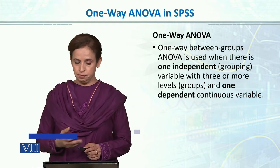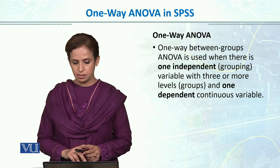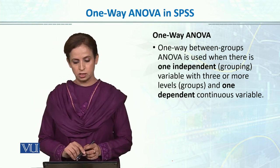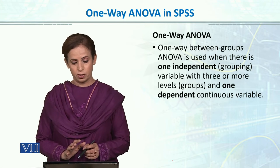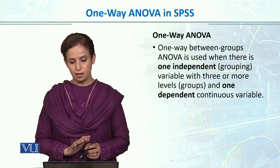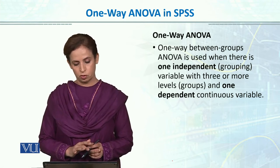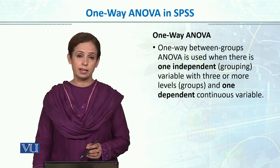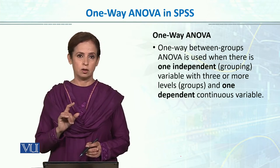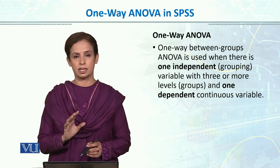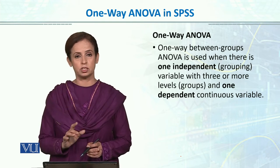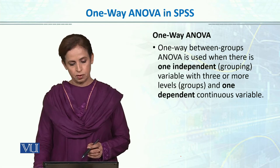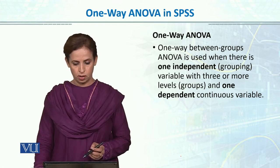For us, it is important to understand the output — which value corresponds to what and how to interpret those values. One-way between-group ANOVA in SPSS is used when there is one independent grouping variable with three or more levels and one dependent continuous variable. One independent variable which is categorical with at least three or more levels — we will opt for one-way ANOVA.